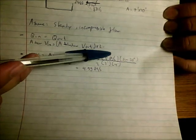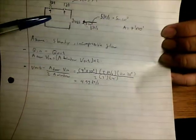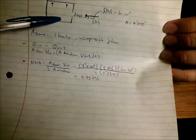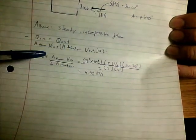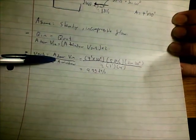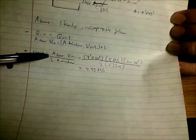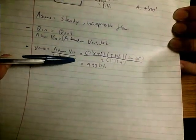...is five feet per second times sine of 20 degrees, since we need the wind component going straight into the garage. Dividing all of that by two times the area of the window, we get 4.99 feet per second.